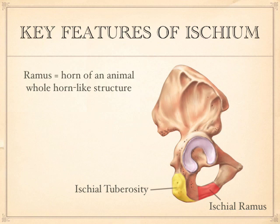The ischium goes down. The pubis goes forward. And the ilium goes up. There's no muscle over this; there are muscles attached into this. There's a lot of connective tissue over this where the muscles attach, but this itself — I'm feeling it right now — it's right there and it's hard.